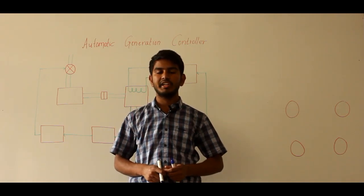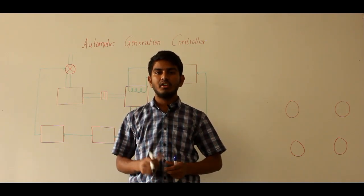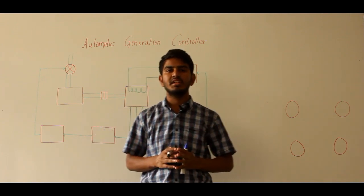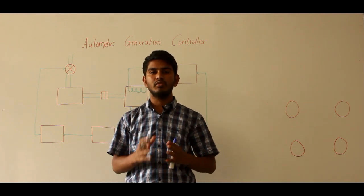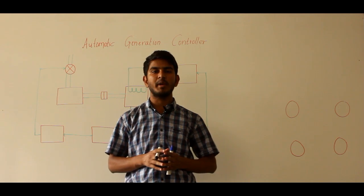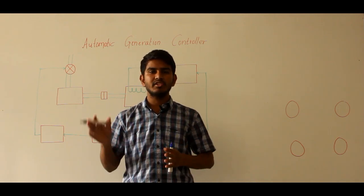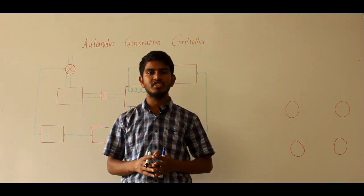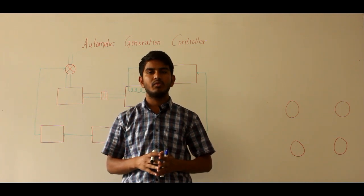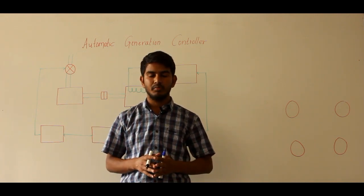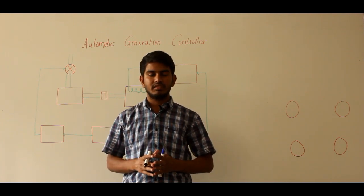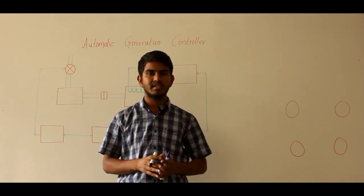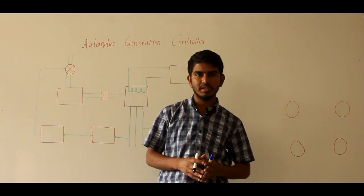Hello friends, in this video let us discuss automatic generation controller. AGC is a system which adjusts the power output of interconnected generators in response to changes in load demand. We know that real power demand and reactive power demand are never steady and they will be continuously changing with a rising or falling trend. As reactive power demand and real power demand change, the frequency and voltage of the various bus systems will also change.